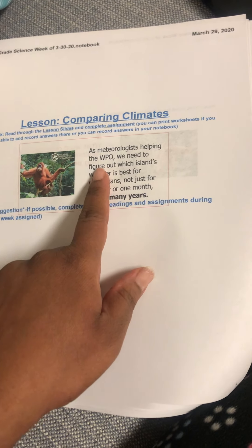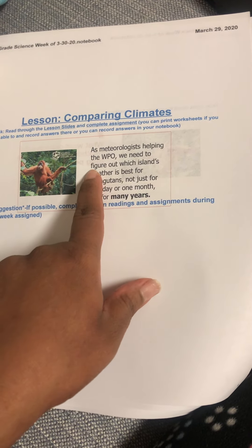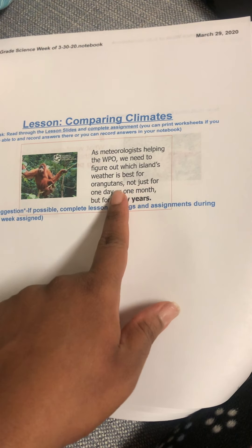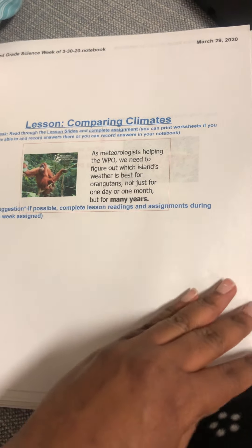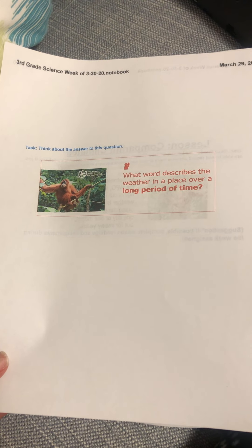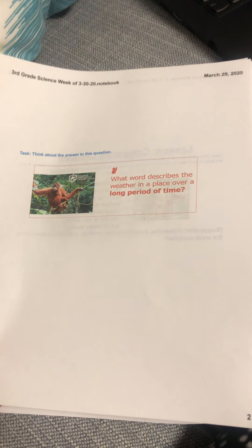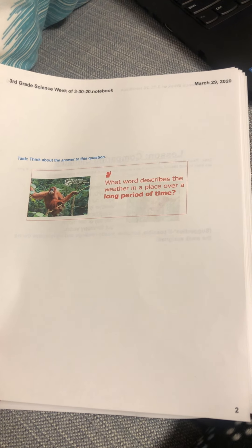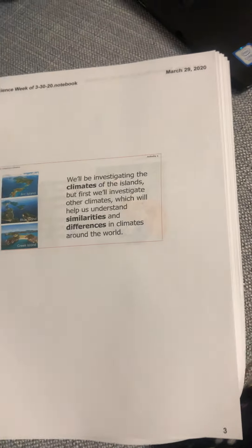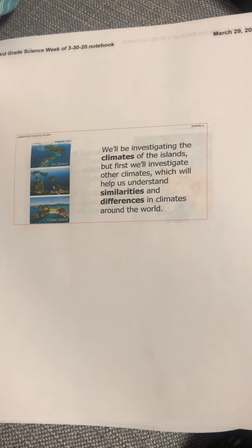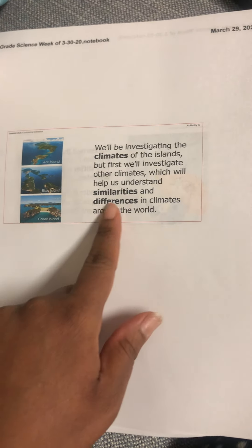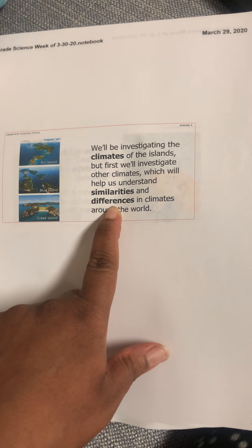As meteorologists helping the WPO, we need to figure out which island's weather is best for the orangutans, not just for one day or one month, but for many years. What word describes the weather in a place over a long period of time? I want you to think about the answer — it starts with the letter C. Think about what word describes weather, the same weather pattern that you see in a specific area.